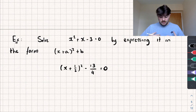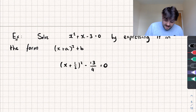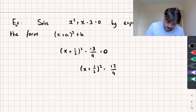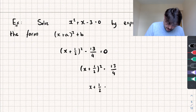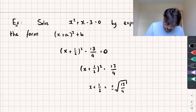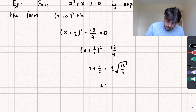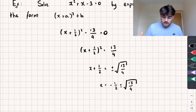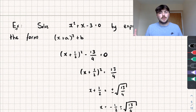Now we can solve it — find the values of x that make the equation equal 0 by rearranging to make x the subject. Adding 13 over 4 to both sides gives x plus one half, all squared, equals 13 over 4. Square rooting both sides gives x plus one half equals plus or minus the square root of 13 over 4. Subtracting one half from both sides gives x equals negative one half plus or minus the square root of 13 over 4.